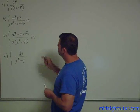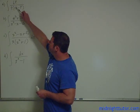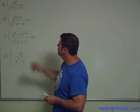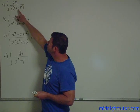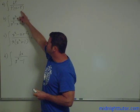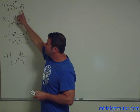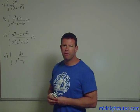So the first problem here: integral of dp over p times the quantity 10 minus p. You can see that no other alternative would work. Let's say we let u equal 10 minus p, then du is minus dp, but we still have this p down here, and then nothing else is going to work. But partial fractions will allow you to solve this problem.